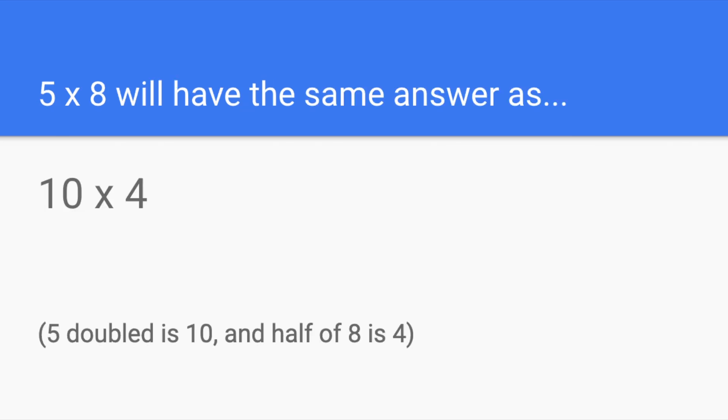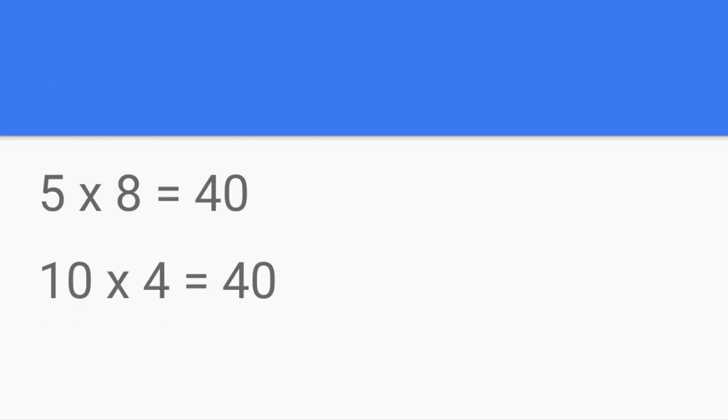For example, if I'm multiplying 5 times 8, which I bet you know the answer to already, I could instead solve 10 times 4. 5 doubled is 10, so that's where that number came from, and the 4 is there because it's half of 8. So, 5 times 8 will have the same product as 10 times 4.